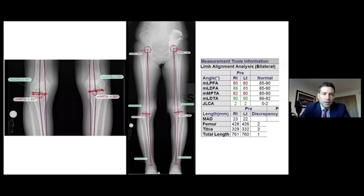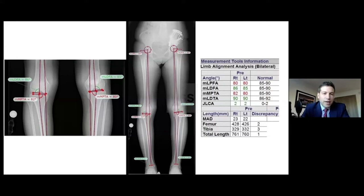We do our complete radiographic examination for the lower extremities, including the mechanical axis assessment. In this case, she's in varus. Her MAD or mechanical axis deviation is 23 medial. Step two of that test is actually determining where the varus is coming from. In this case, this patient has an MPTA of 82 and a normal LDFA of 86, so she has a varus limb coming from varus proximal tibia.